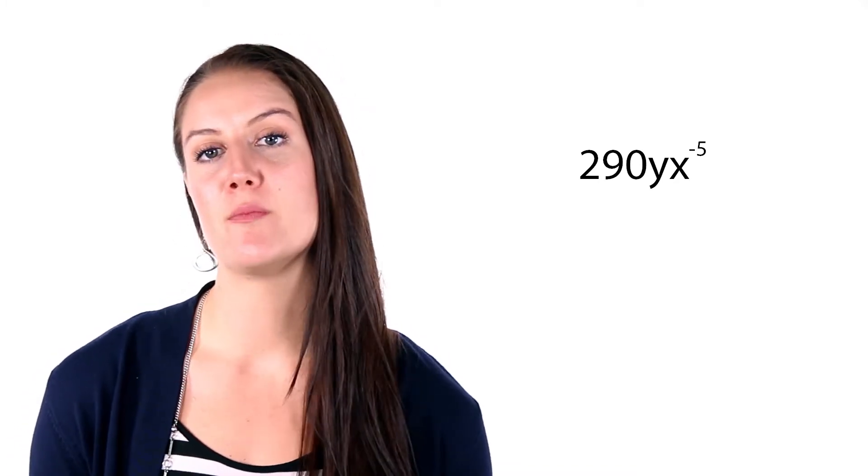Let's look at another example. 290yx to the negative 5th. This is not a polynomial, because when simplified, the variable y is moved from the numerator to the denominator because of the negative exponent, and a polynomial cannot have a variable in the denominator.